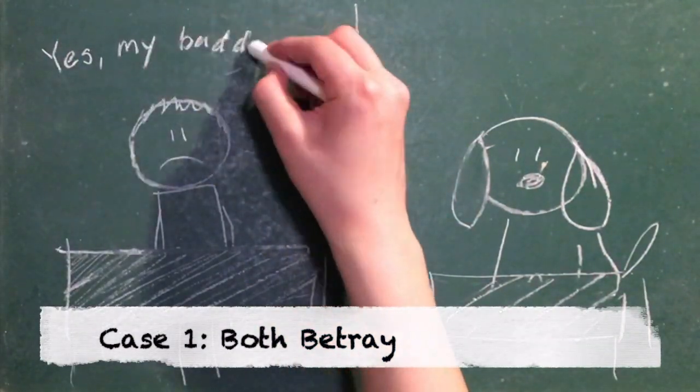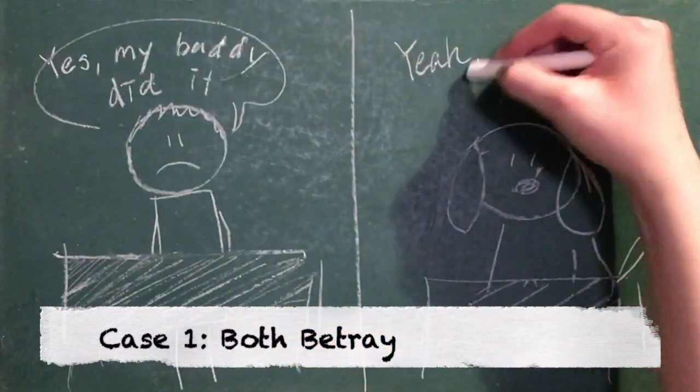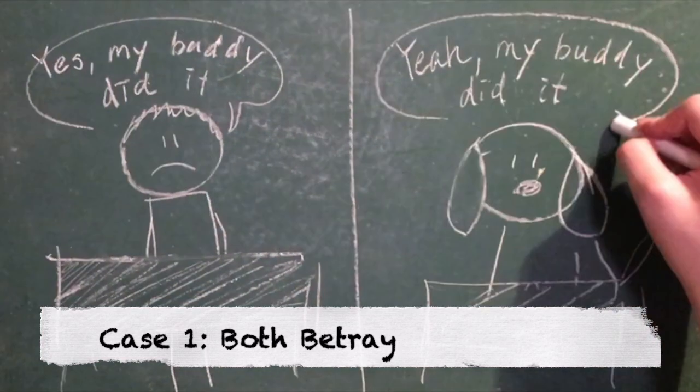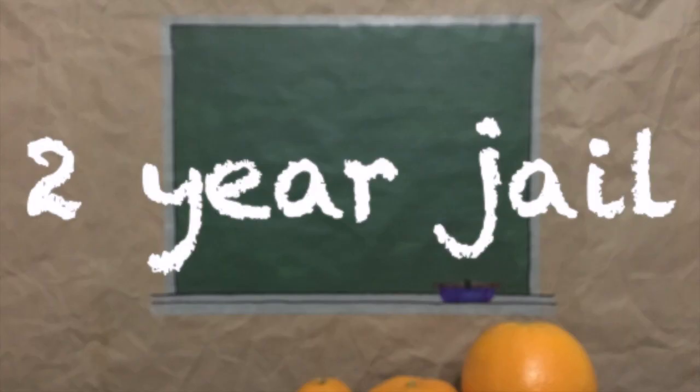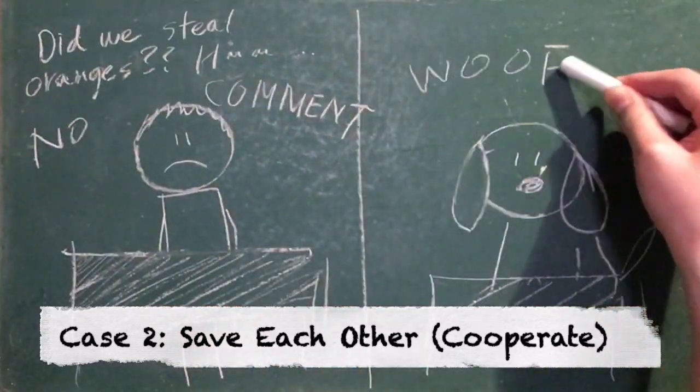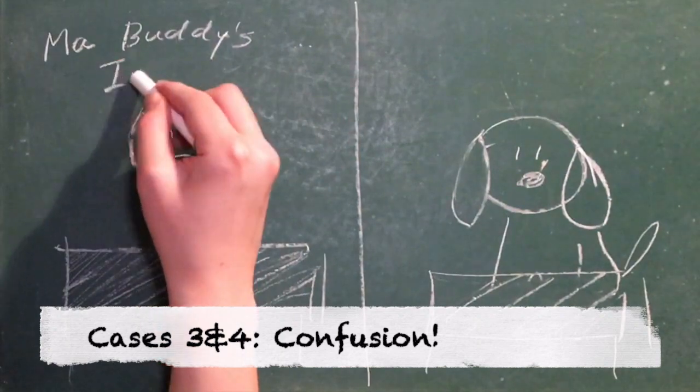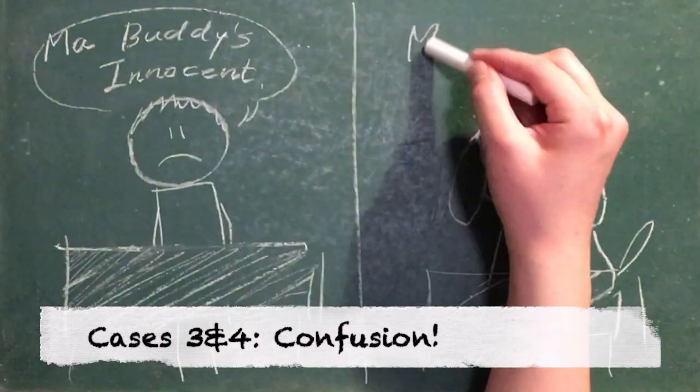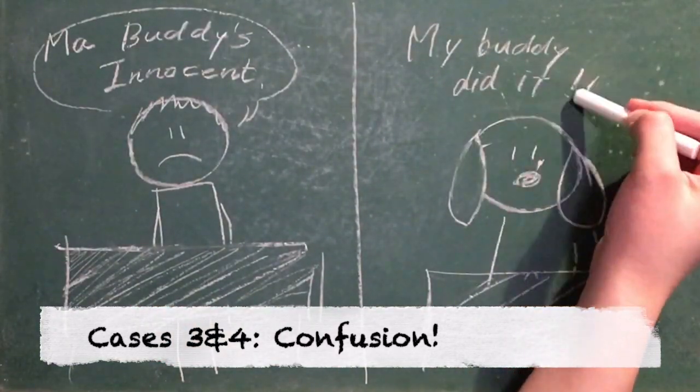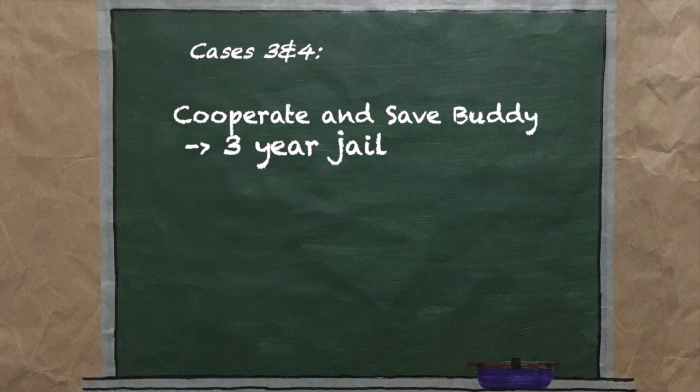The prosecutor says that if you both give information about your partner, therefore betraying each other, your sentence will both be two years. If you both don't say anything, you both get a one-year sentence. If you don't say anything because you want to save your buddy, but your buddy tells on you, then you get a three-year sentence and your buddy gets zero, and vice versa.